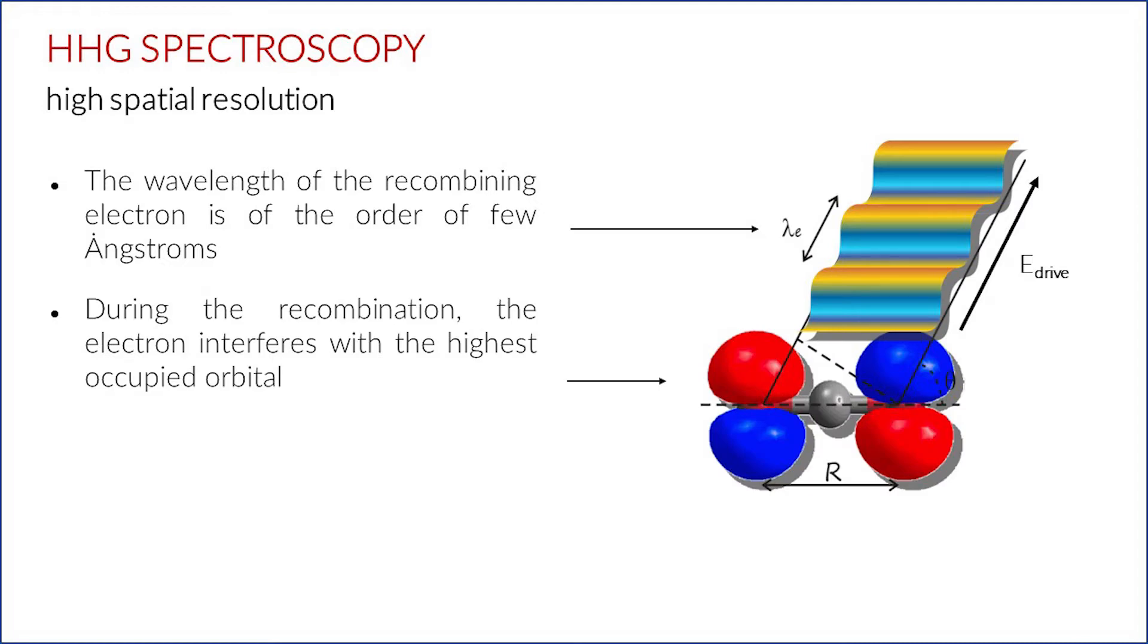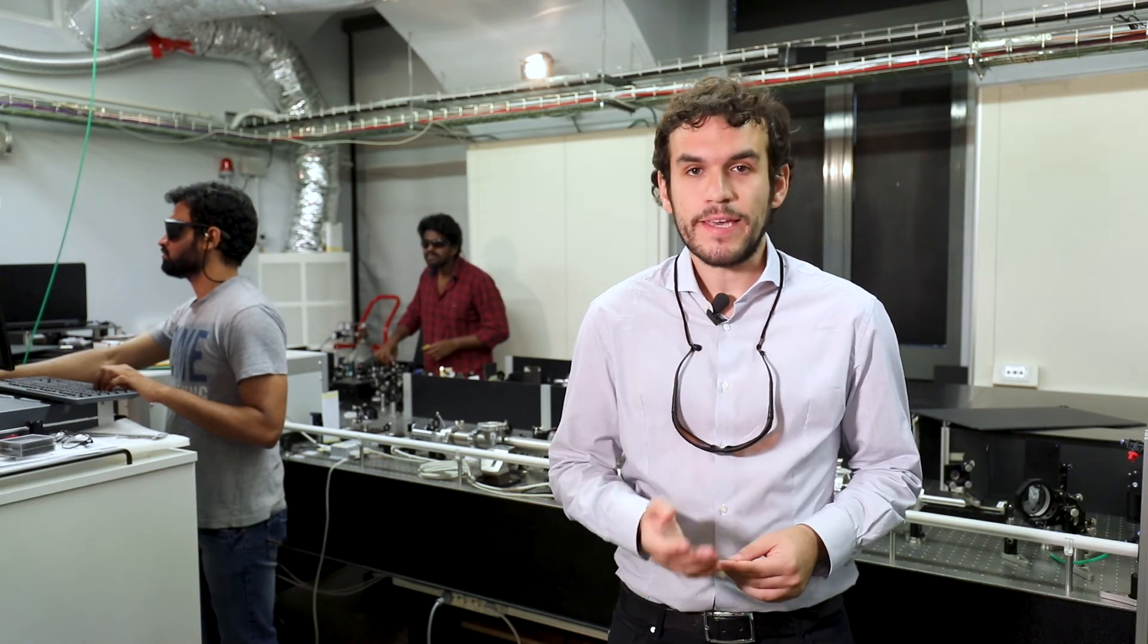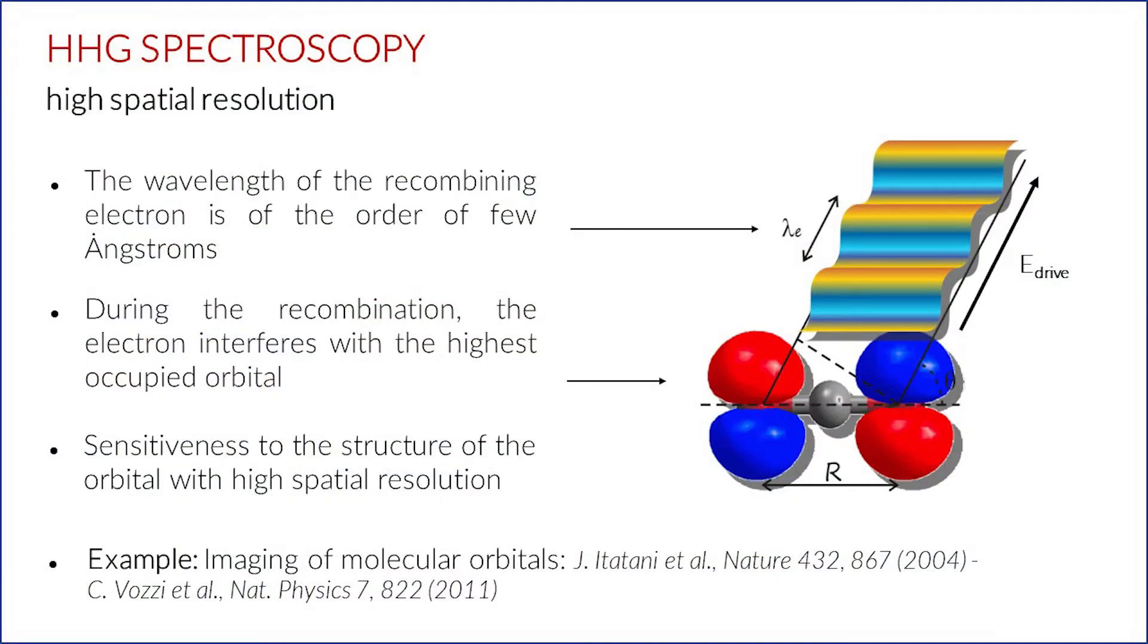When the electron recombines with the ion, it interferes with the highest occupied orbital of the system, which allows to be sensitive to electronic structure with very high spatial resolution. This capability was used for making the image of the molecular orbitals in many molecules, like N2 and CO2.